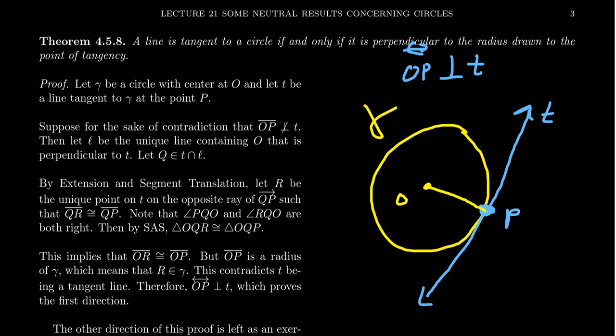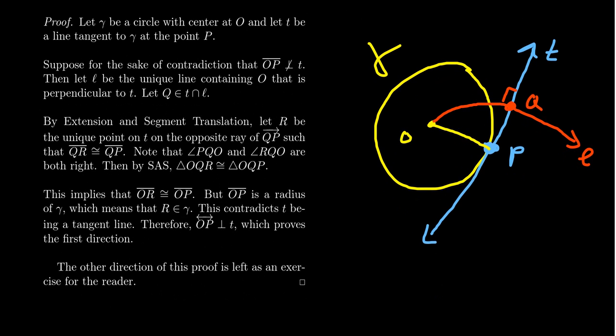So we're going to do this by contradiction. We're going to suppose not. Suppose that this line OP is not perpendicular to T. So the line segment isn't either. So then we're going to let L be the unique line which contains O that is perpendicular to T. So we've proven previously that such a line does exist. So we're going to take the perpendicular drop from the center of the circle. And again, for crudeness sake, I'm going to exaggerate this situation here. So we're going to call this line here L. But L forms a right angle with the line T. And it does pass through the center of the circle. Let's call the point of intersection between T and L. We're going to call that Q. This would then be the foot of the perpendicular that we drop from O onto T to use that vocabulary that we've used previously.